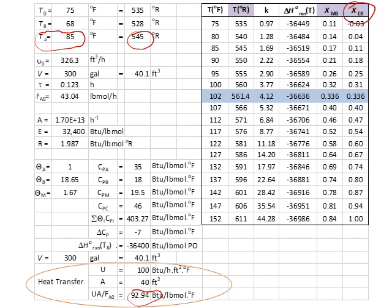Using Solver, identify where XMB equals XEB. You can see that XMB is greater than XEB at some temperatures and smaller at others, so the solution lies in between. Select the target cell, go to Solver, set the constraint that XMB equals XEB by changing the temperature cell, and click Solve. It will find the steady-state temperature for you.